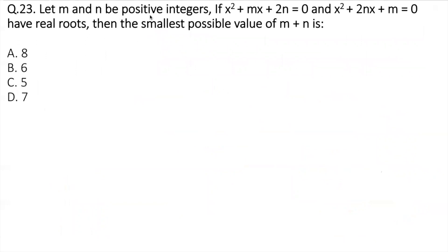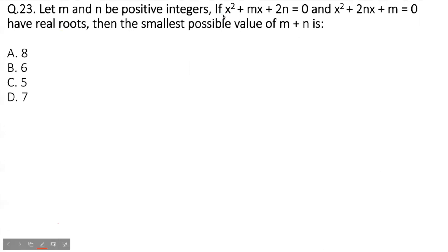Let m and n be positive integers. If x² + mx + 2n = 0 and x² + 2nx + m = 0 both have real roots, then the smallest possible value of m + n is?